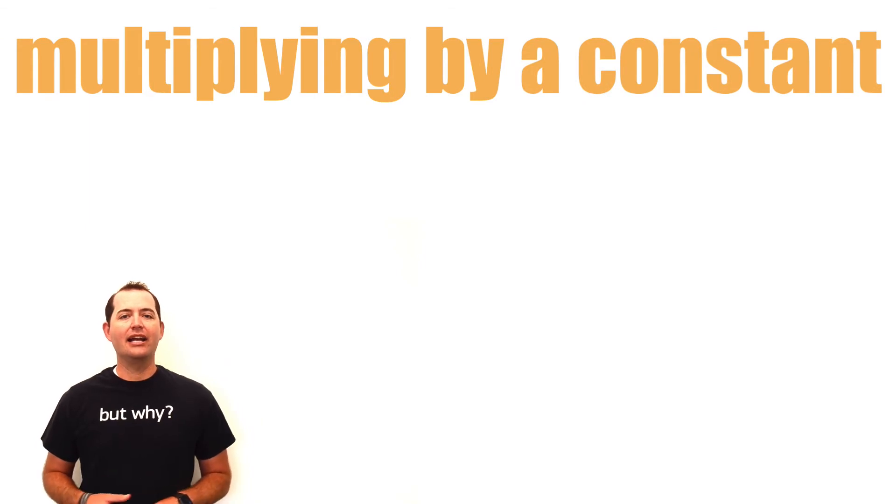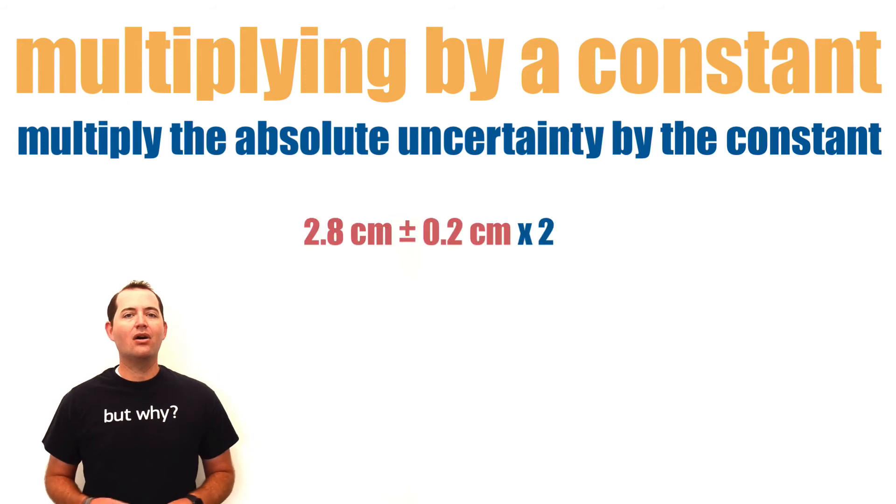If we are multiplying a measured value with an uncertainty by a constant, then we will also multiply the absolute uncertainty by the same constant.